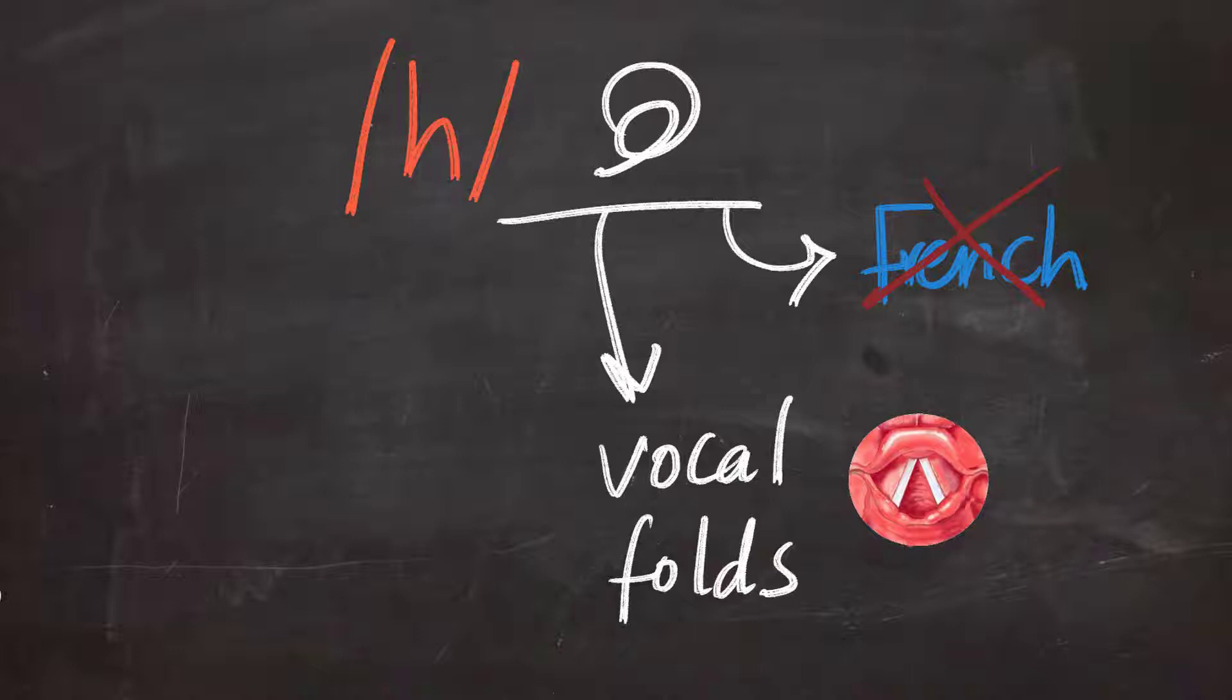And as you can see in this chart for the vocal folds, you can see when you pronounce the H sound, you will be basically opening your vocal folds and letting the air run through them. It is much the same process that you make when you yawn.